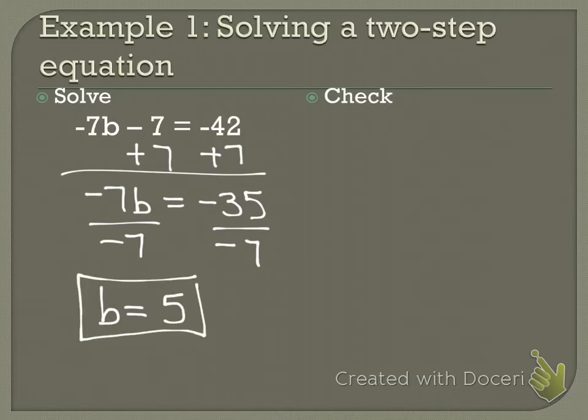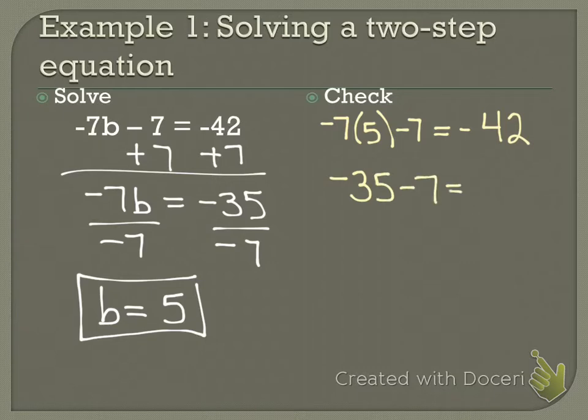That's what I believe my answer is, but I need to go back and check just to make sure. So now I'm going to say negative 7 times 5 minus 7 equals negative 42. What's negative 7 times 5? Negative 35 minus 7 equals negative 42. Same sign, so I add and keep. Negative 42 equals negative 42. Checks out.